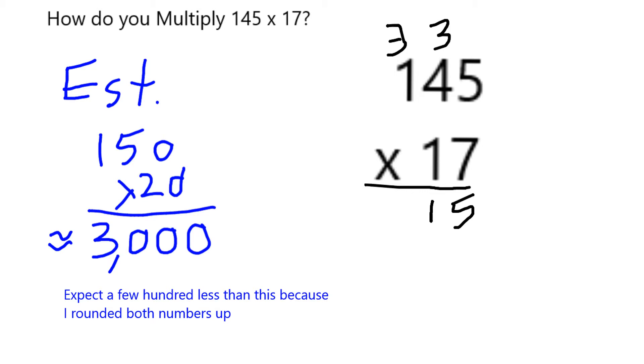Then 7 times 1 is 7, plus 3 is 10. So multiplying by 7 gives me 1,015.